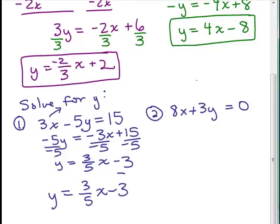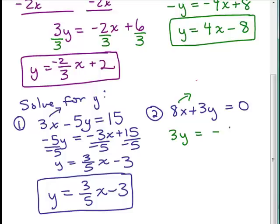Give ourselves a little more room for the answer. Okay. Second one. Notice the other side is 0. No problem. You're still going to begin by subtracting 8x. So 3y equals negative 8x. You don't put plus 0. Divide both sides by 3. And the answer is y equals negative 8 thirds x.